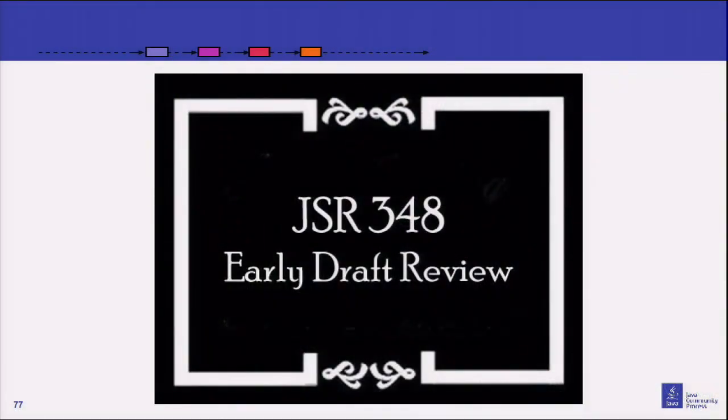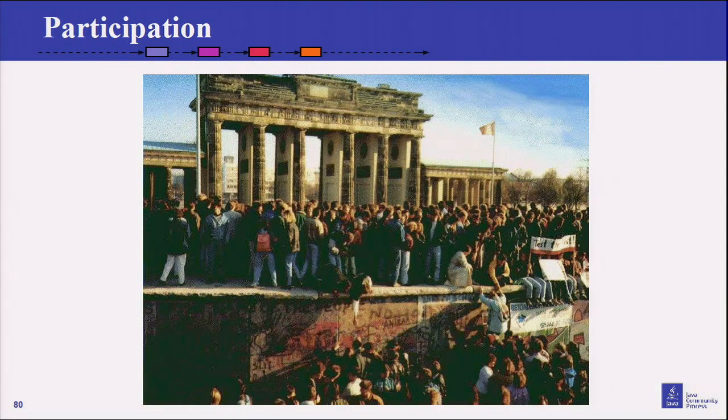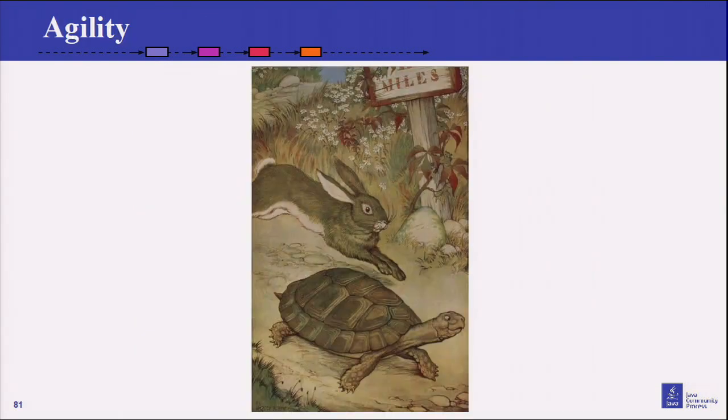JSR 348 is our current attempt to modify the process. We use the process itself to change the process — it's like a formal way of changing the constitution. The themes of this particular release, which we're trying to finish by October: transparency — doing stuff out in the open instead of in smoke-filled rooms; participation — making sure there are no barriers that prevent people from joining in and helping; and agility — trying to make sure that we do things fast and smoothly.